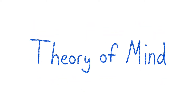Theory of mind is one's ability to recognize that other people have different mental states and perspectives from one's own. It is your ability to theorize about what is going on in someone else's mind. This typically develops during our early childhood.